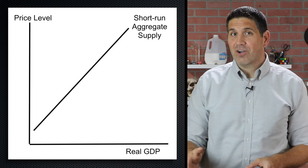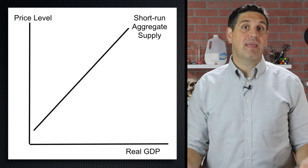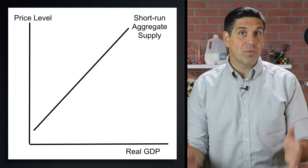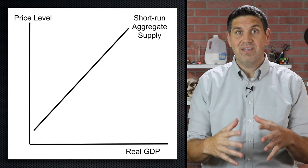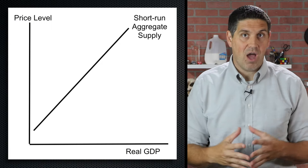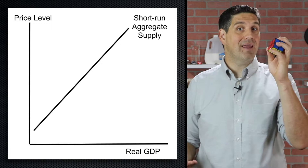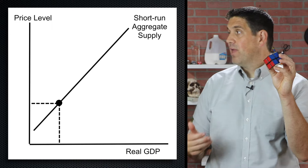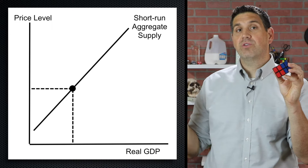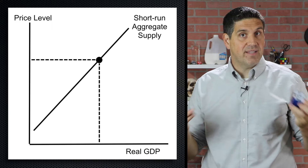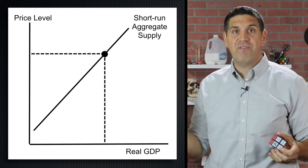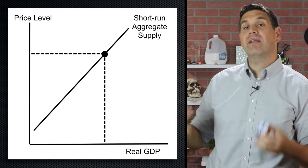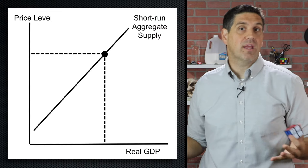Remember that aggregate means add it all together. So the aggregate supply curve is the supply of all goods and services in the entire economy. And in the short run, it's super simple. As price level goes up, producers have an incentive to produce more because they'll make more profit, so the quantity supplied would increase.